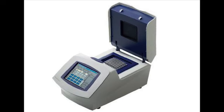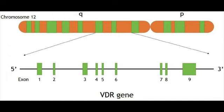Here we amplify the VDR gene, that is the Vitamin D Receptor gene, to determine its polymorphism. In the VDR gene, there are several RFLP — Restriction Fragment Length Polymorphisms. One of the RFLPs is the FokI gene. In this experiment, we are going to determine the polymorphism of the VDR FokI gene.